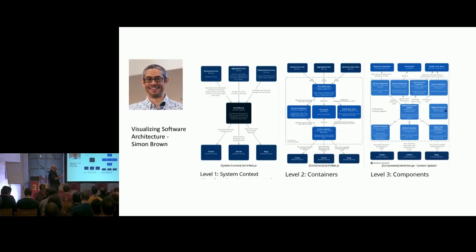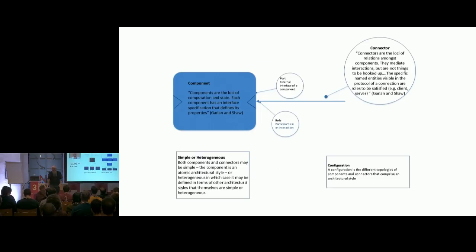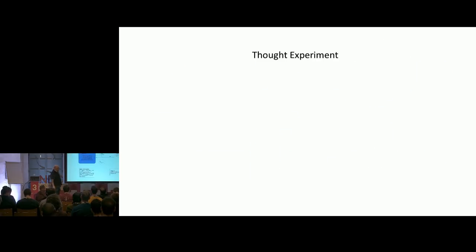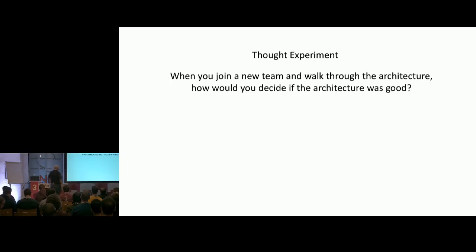This is essentially a boxes-and-lines diagram from architectural styles — a more formal component-connector diagram. It adds ports where you connect into a component, defined as roles, and the idea is you start with one box representing your system, then decompose it: that box consists of another set of boxes and lines, all the way down.